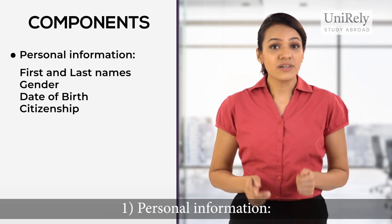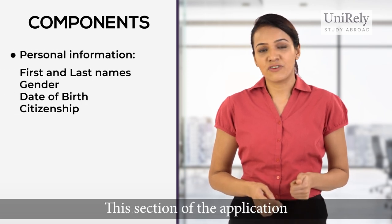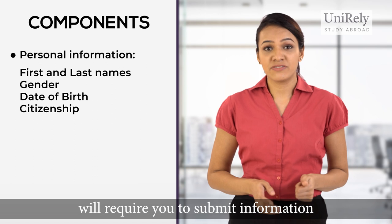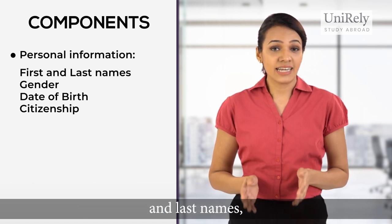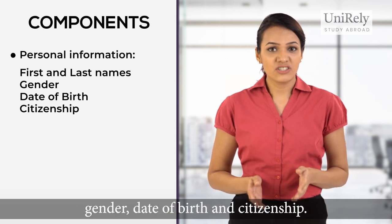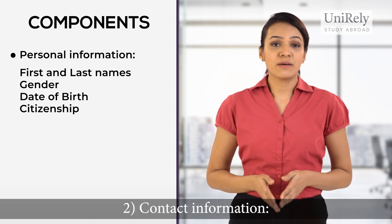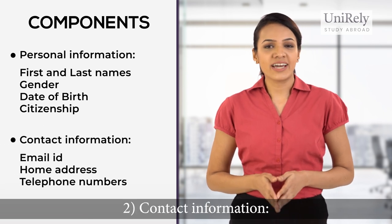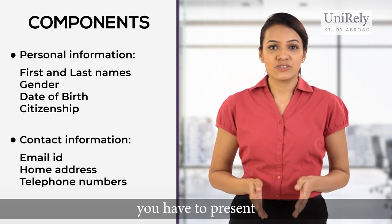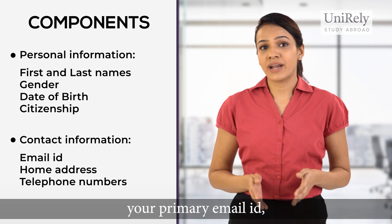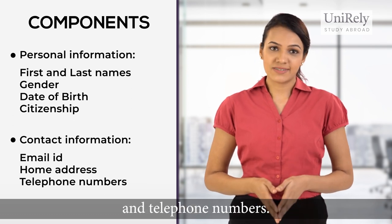Number one, personal information. This section of the application will require you to submit information like your legal first and last names, gender, date of birth, and citizenship. Number two, contact information. In this section, you have to present your primary email ID, home address, and telephone numbers.